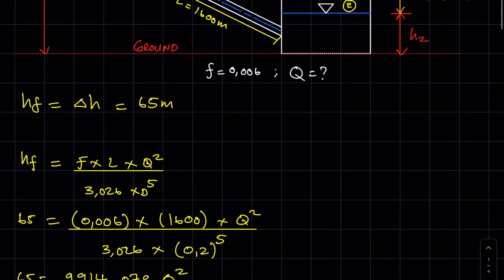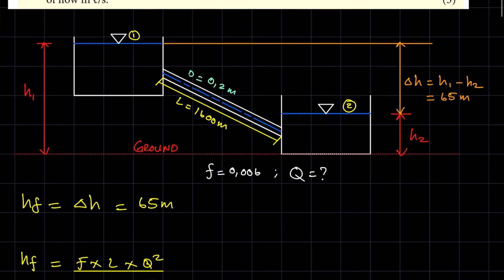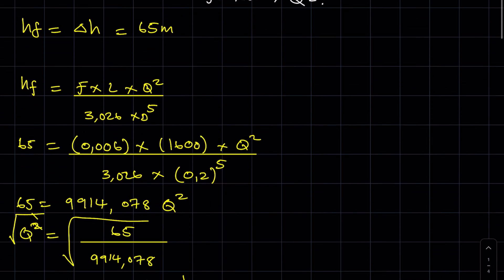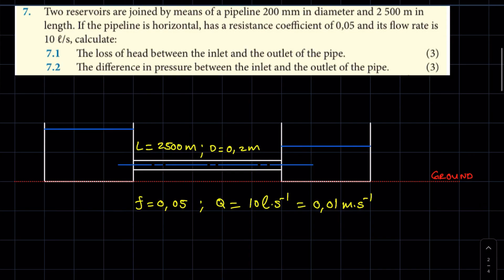So that is how you would approach such a problem — a case where you have two reservoirs connected by a pipeline. Next, I want us to look at a problem where essentially we are looking at a horizontal pipe.